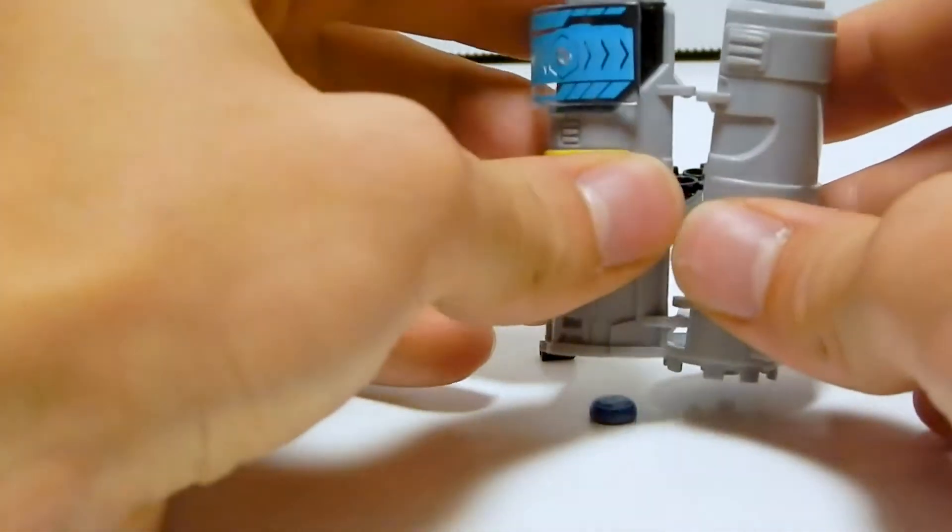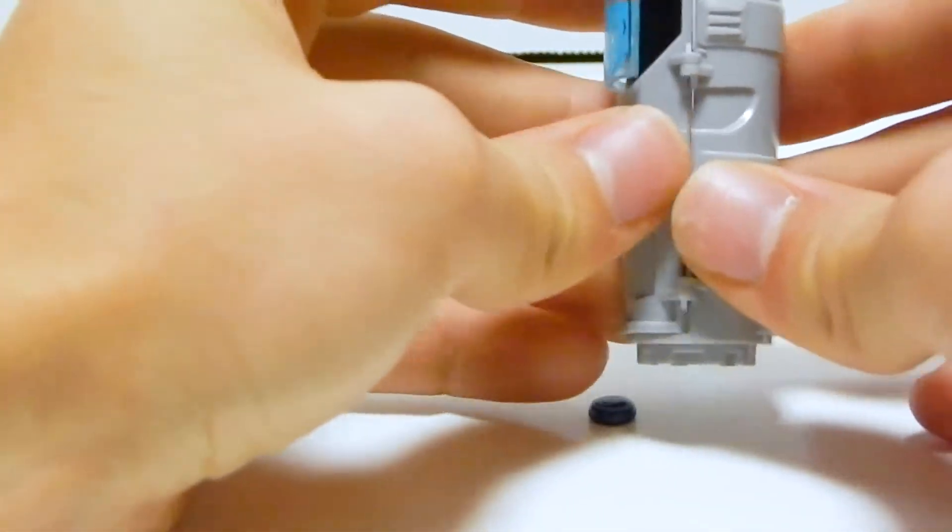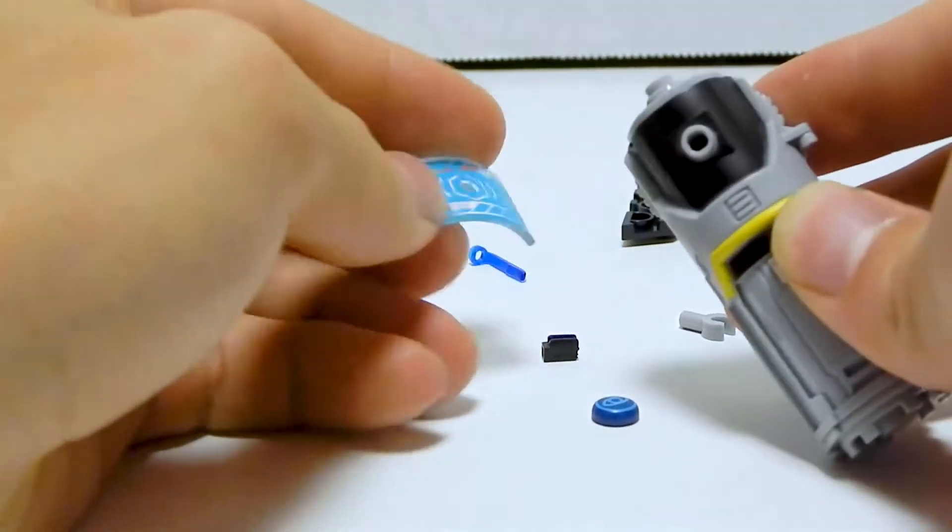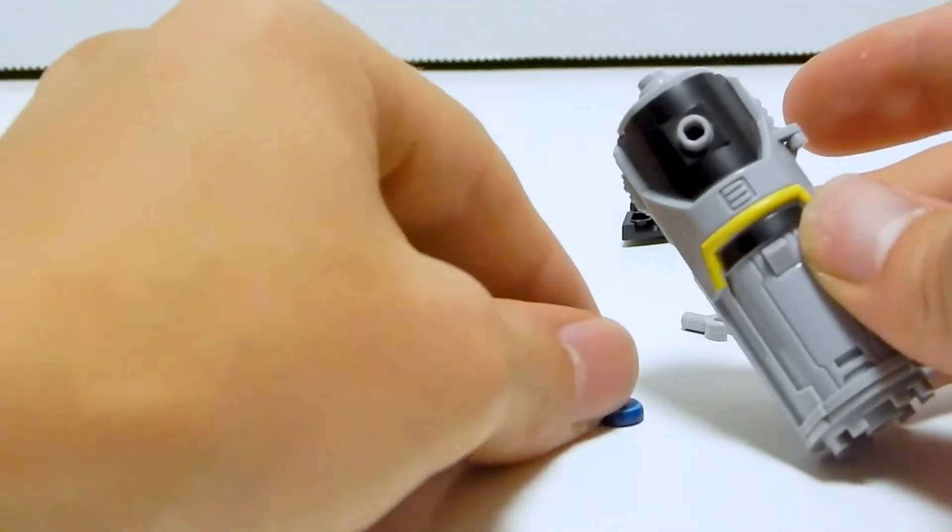To put this together, you just kind of pop it on there and it closes up. That's pretty nice looking. You can remove that. There's a stud there. This kind of looks like a cryopod now.